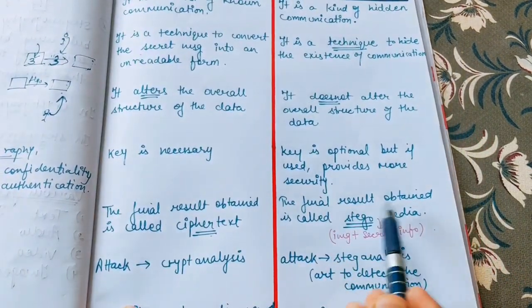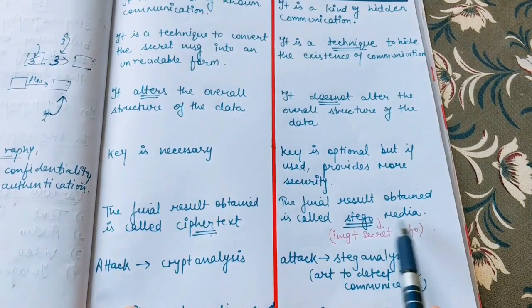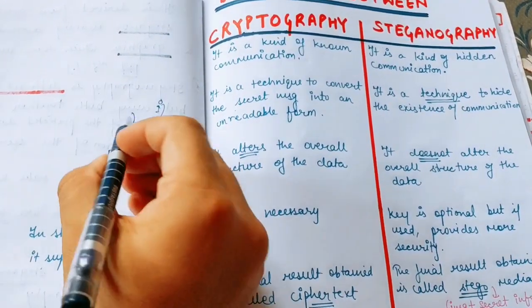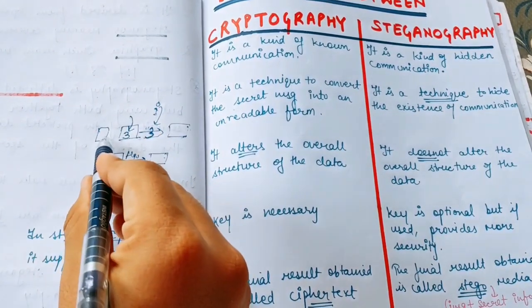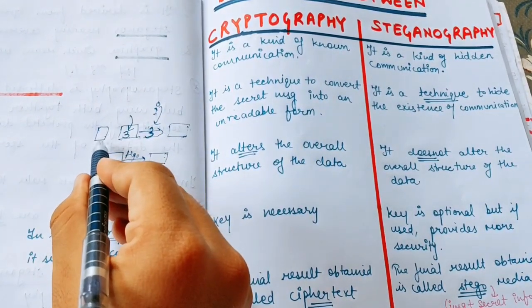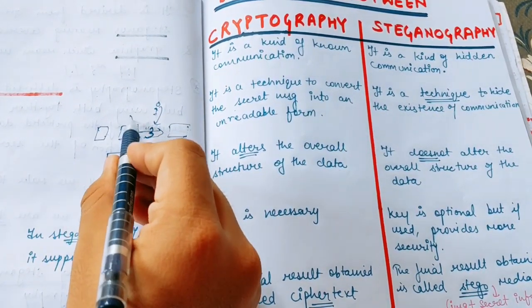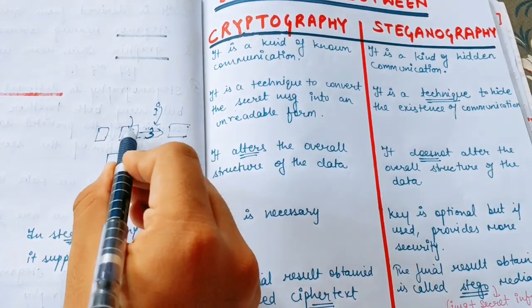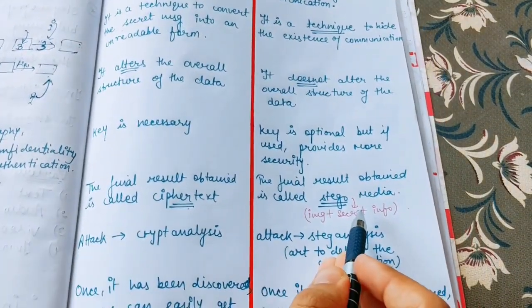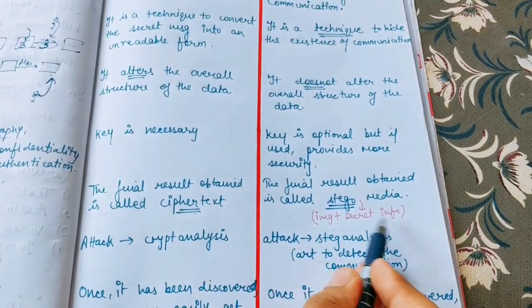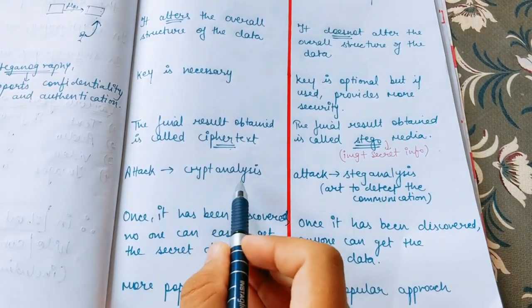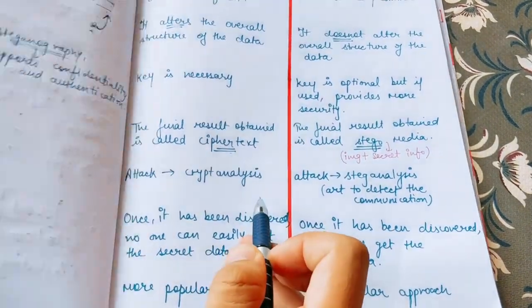In cryptography, the final result obtained is called the ciphertext. In steganography, the final result obtained is called the stego media. When a normal image has no embedded data, it is just a normal image. When we embed a secret message into that image, the image along with the embedded secret message is called stego media — or stego object — which equals image plus secret information.